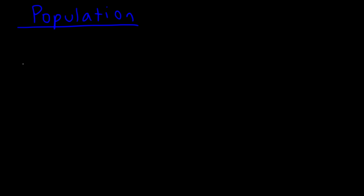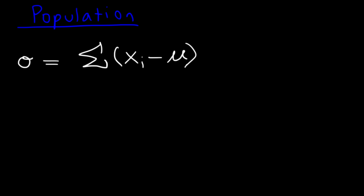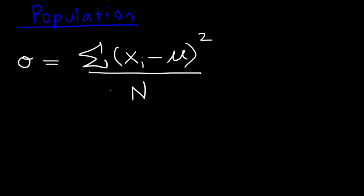The first one is the population standard deviation. This formula is represented by the letter sigma — that's the standard deviation. It's equal to the sum of all the differences between every point in the data set and the population mean, which is mu. You need to square it, divide it by n, which is all of the numbers in the set, and then take the square root of the whole result. That's the population standard deviation.